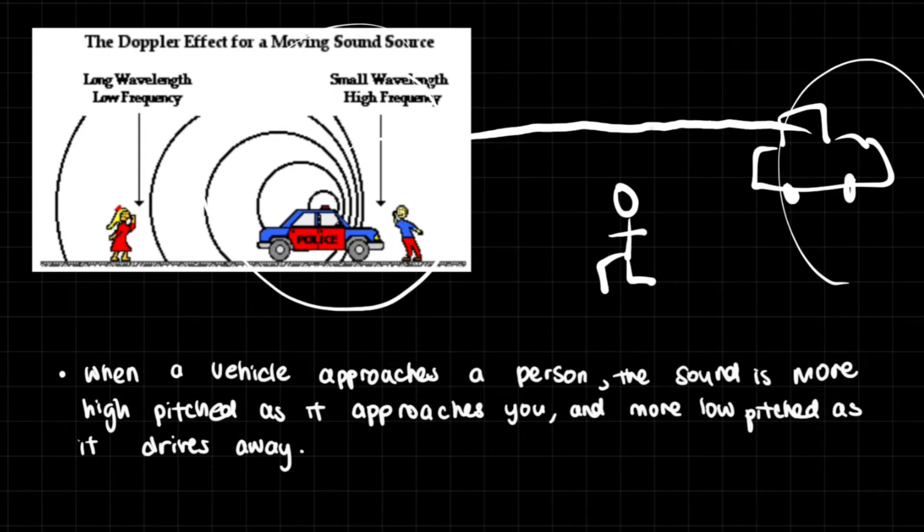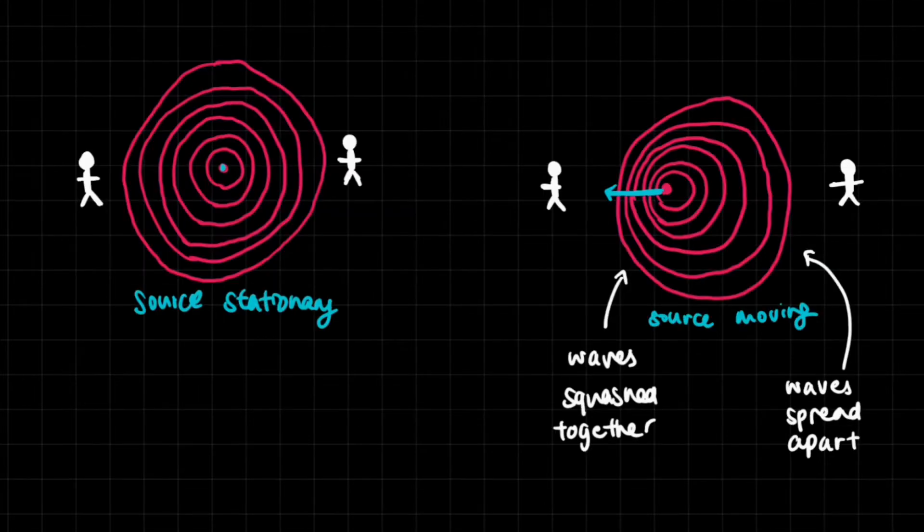When it's much further away from you, the pitch tends to stay constant. When it's moving very close past you, you can literally hear the pitch of the car going down. So let's listen to that race car thing again. Yeah, the pitch of the car goes from a higher pitch to a lower pitch.